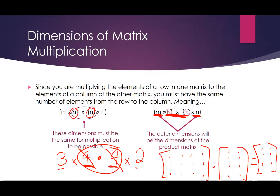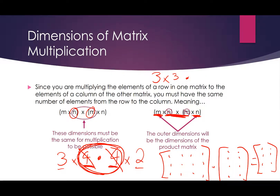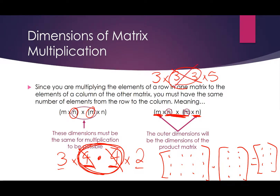So those two values have to be the same, and if they are, the remaining outside values are the dimensions of your answer. Your answer will have 3 rows and 5 columns if you have that type of matrix configuration.